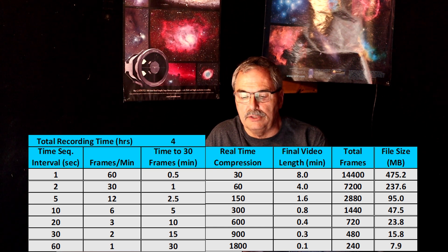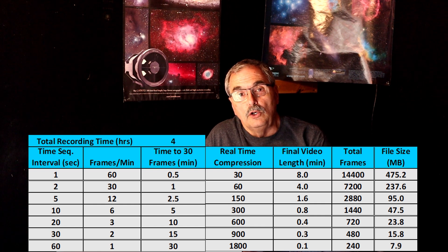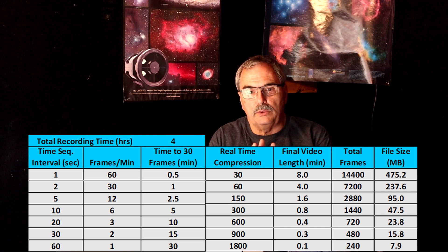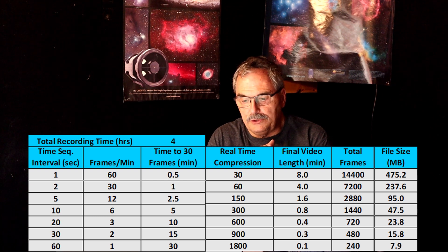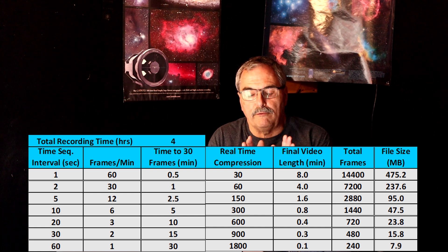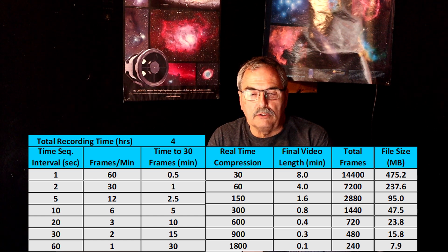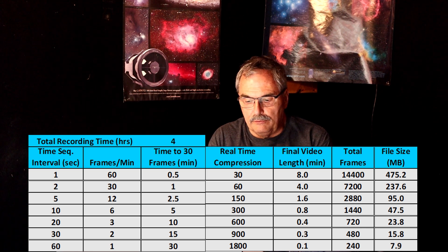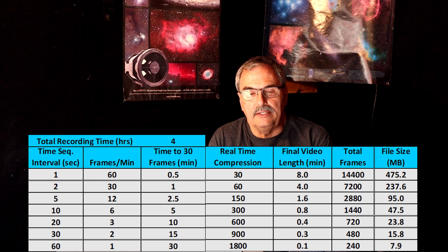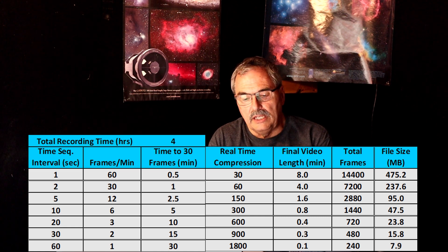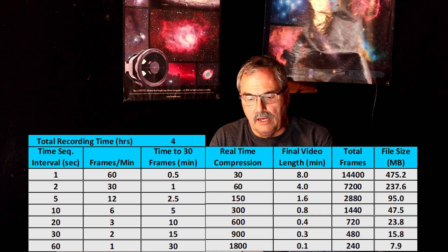This results in time compression numbers ranging from 30-to-1 for the 1-second interval, all the way to 1800-to-1 for the 60-second interval — you're taking real time and squishing it down into a very short period in the final video. So how long will the video actually be? If you record for four hours at a 1-second interval, you'll get an 8-minute video; at 2-second intervals, a 4-minute video; and at 60-second intervals, just a 6-second video — so very long intervals yield very little usable footage.